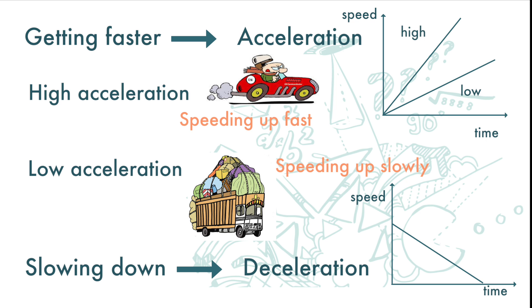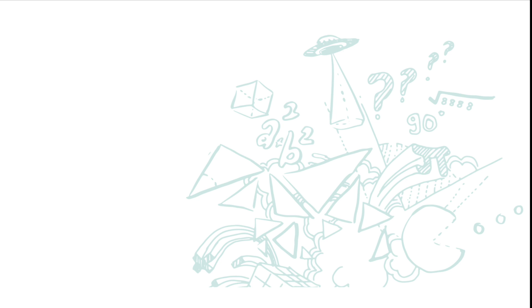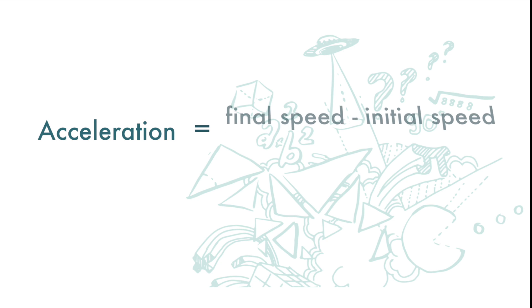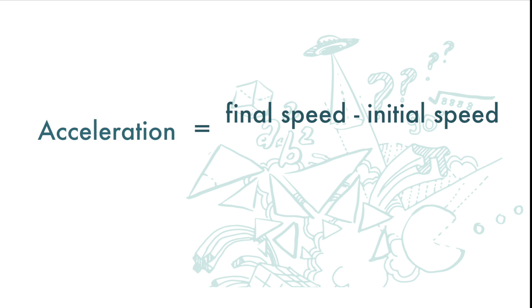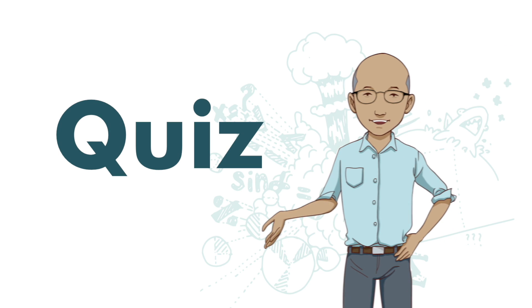In a speed-time graph, deceleration is shown as the graph slanting downward. For all these, there is only one formula: acceleration equals final speed minus initial speed, divided by time taken. Please do the quiz.